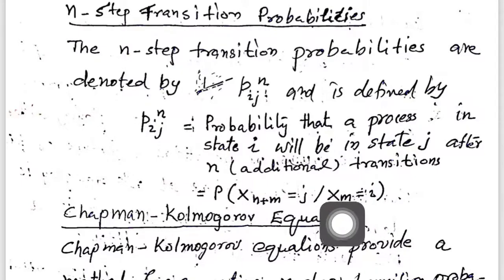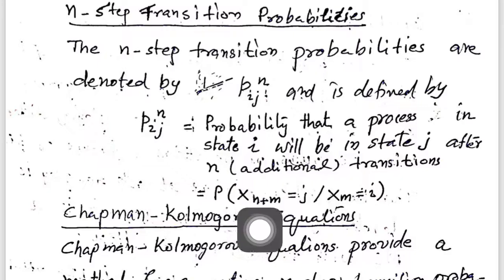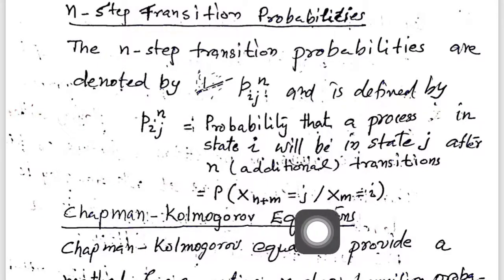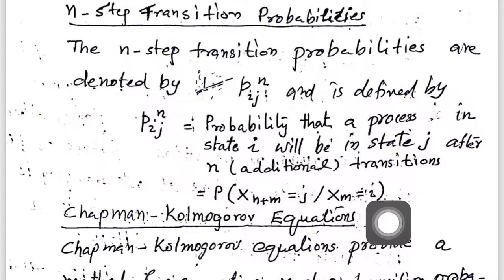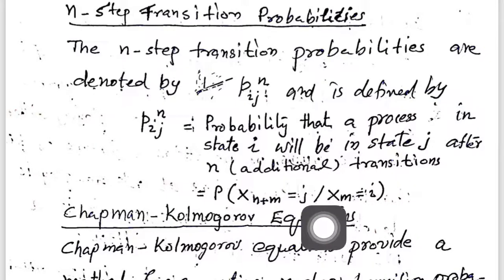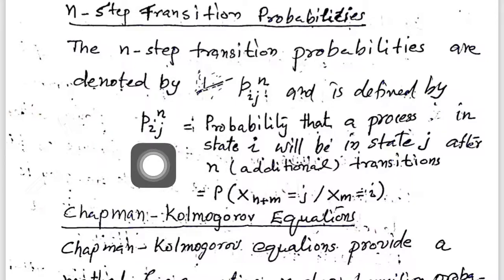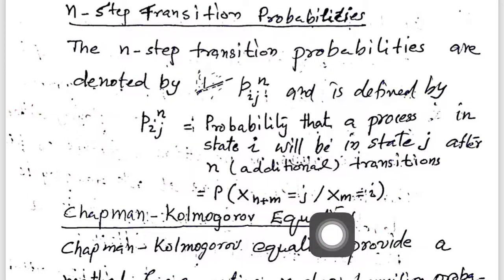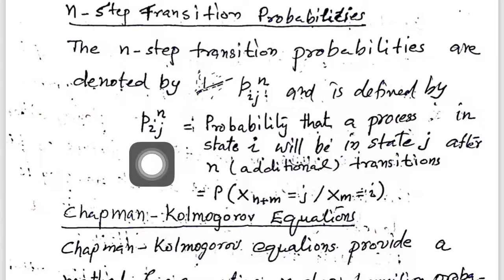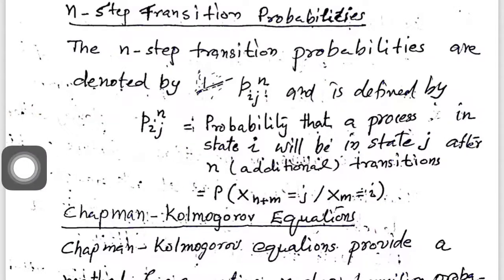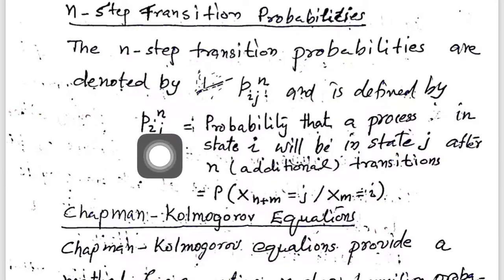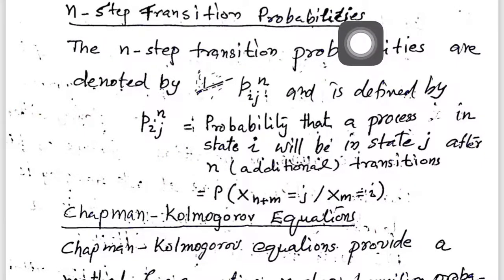So m can be anything. For example, m may be 0. If you put m equal to 0, this becomes the probability that X_n equals j given X_0 equals i. This is the n-step transition probability P_ij^(n): the probability that the process goes from state i to state j in exactly n steps.